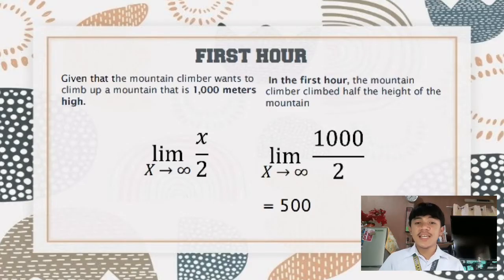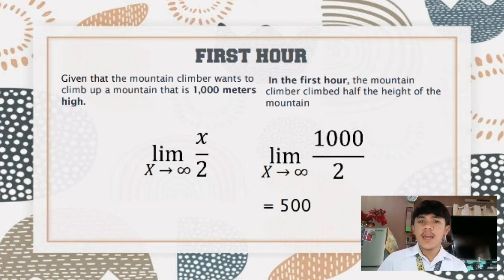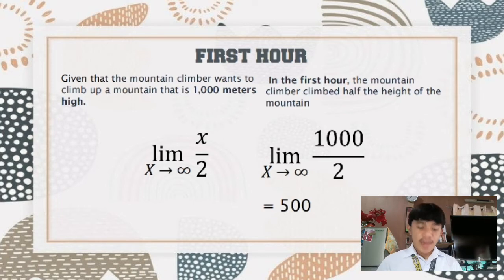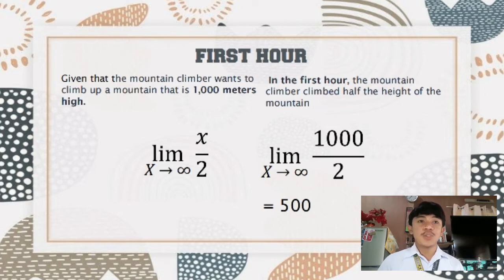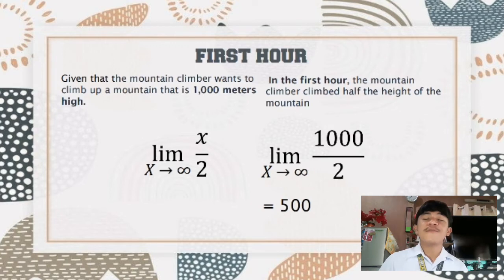In the first round, given that the mountain climber wants to climb up a mountain that is 1,000 meters high, the mountain climber climbed half the height of the mountain. With this solution, we are going to use the equation: the limit of x over 2 as x approaches infinity. All we have to do is substitute x with 1,000 and divide it by 2. So the answer will be 500. Therefore, in the first round, the mountain climber was able to climb 500 meters.